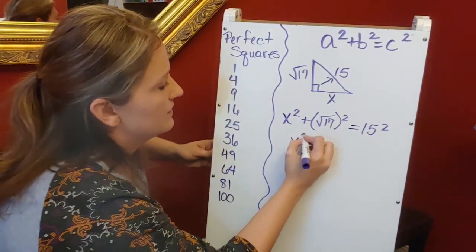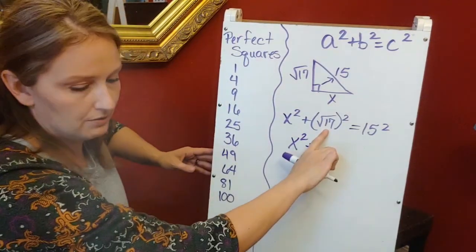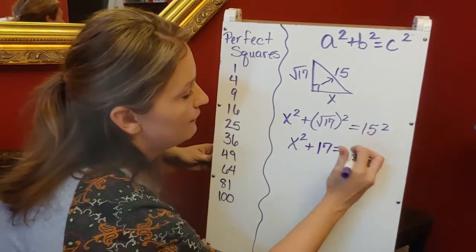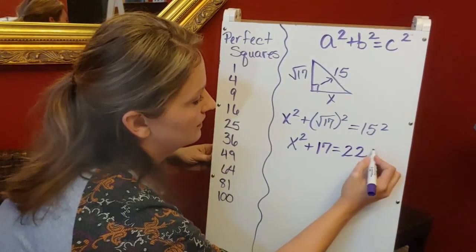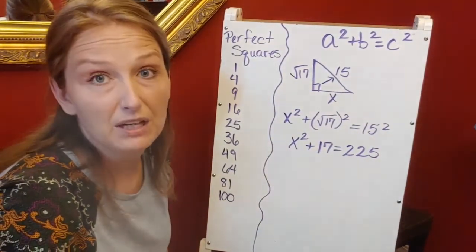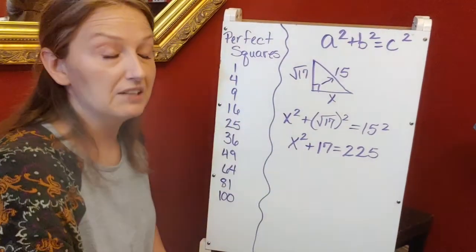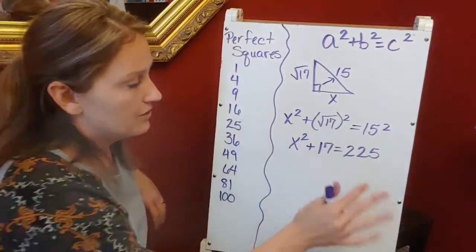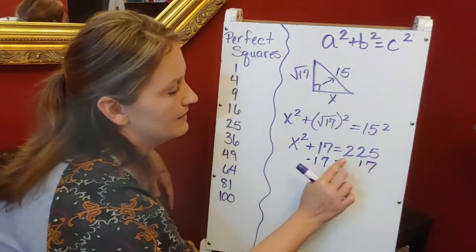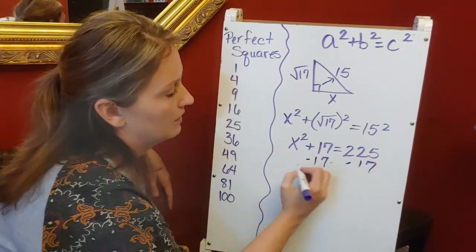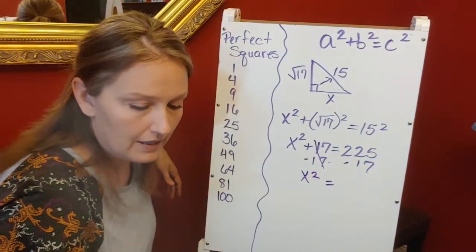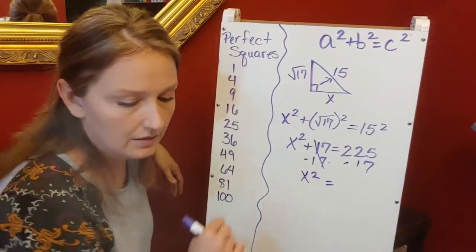Simplifying this out: √17 squared is just 17, and 15² is 225. I'm going to finish solving. I need to get x² by itself, so I subtract 17 from both sides. x² = 225 - 17 = 208.